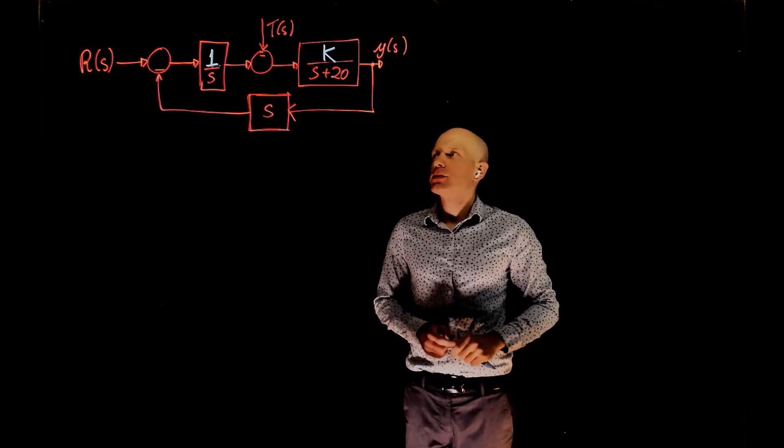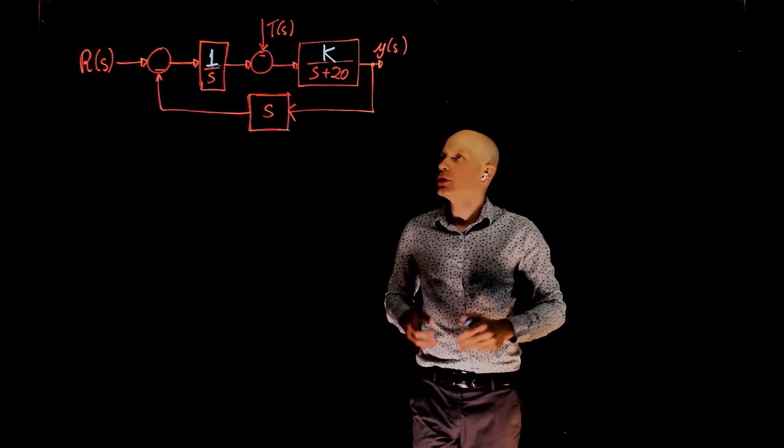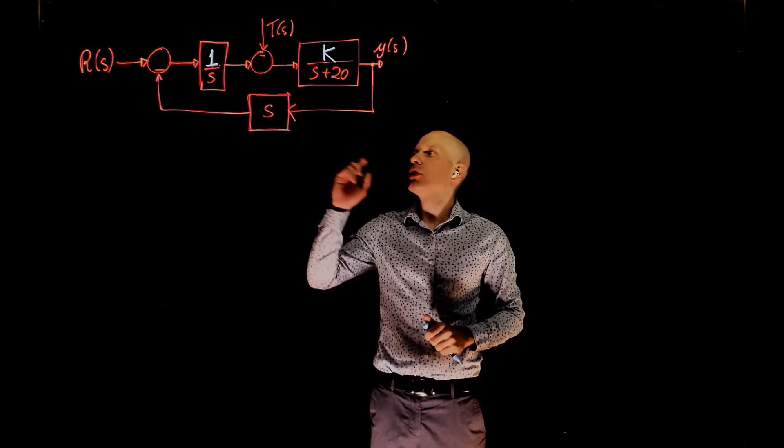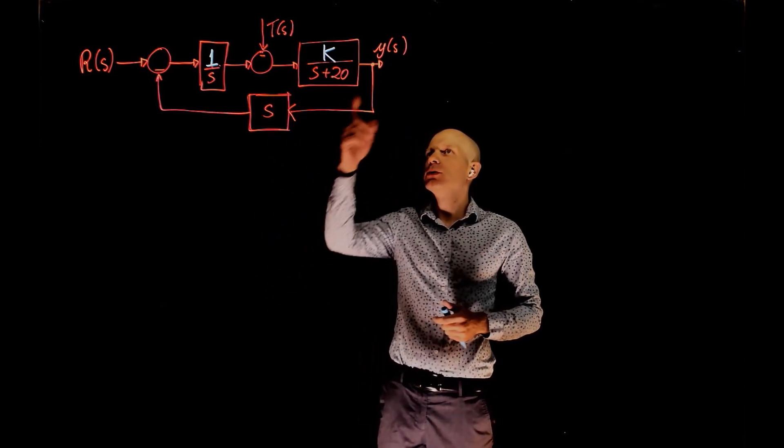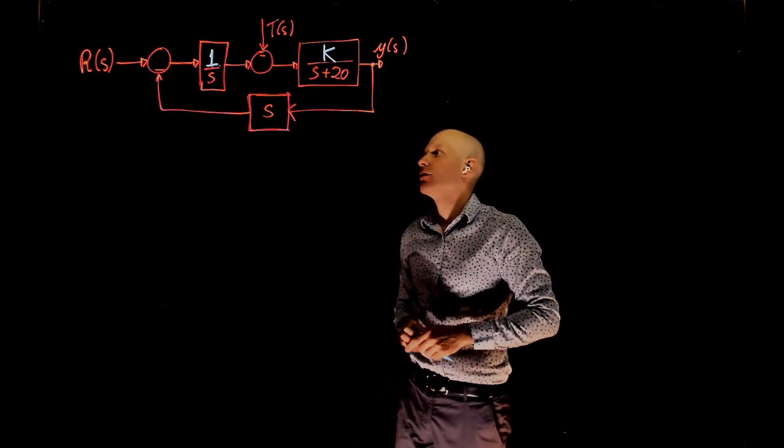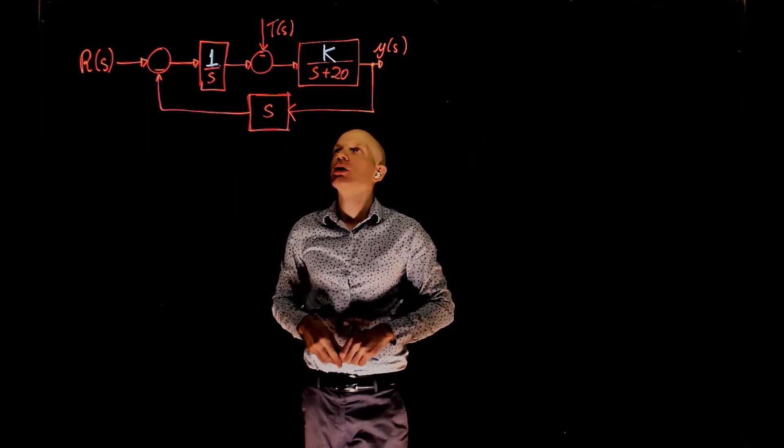In the second part of this problem, we are interested in the settling time within 2% of the final value for a unit step input of T(s). To do that, we now need to find the transfer function between the output and the disturbance T(s). And in that case, r goes to 0.